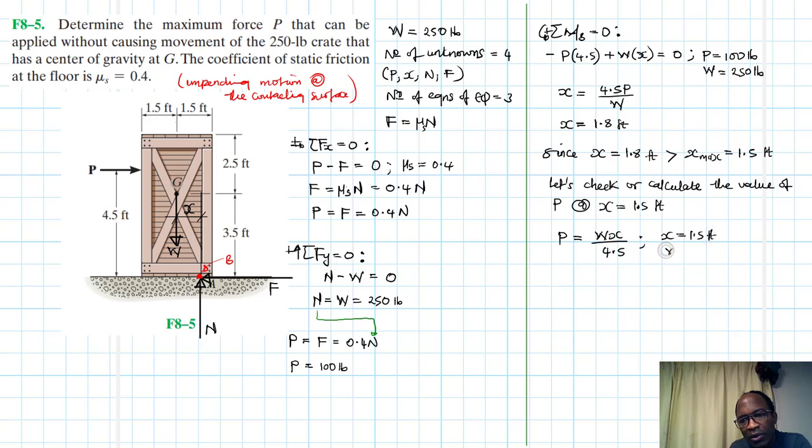Therefore our value of P is going to be equal to WX divided by 4.5, where X is equal to 1.5 feet and W is equal to 250 pounds. Therefore our P is just going to be equal to 250 by 1.5 divided by 4.5. So we will have 83.33 pounds. Therefore the maximum value of P that we can apply without causing this particular crate to overturn is 83.33 pounds.